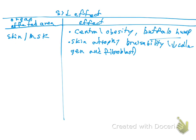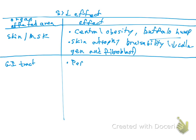Moving to the gastrointestinal tract: the patient is going to present with peptic ulcer, and the consequence of peptic ulcer is hemorrhage and gastrointestinal bleeding. Gastrointestinal bleeding is not good because it decreases prostaglandins. The patient is also going to present with symptoms of fatigue among other things.